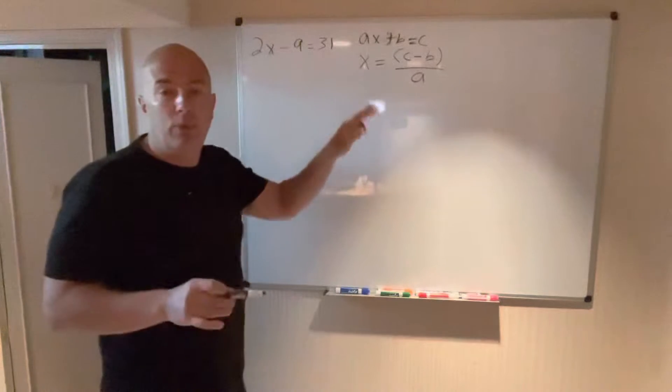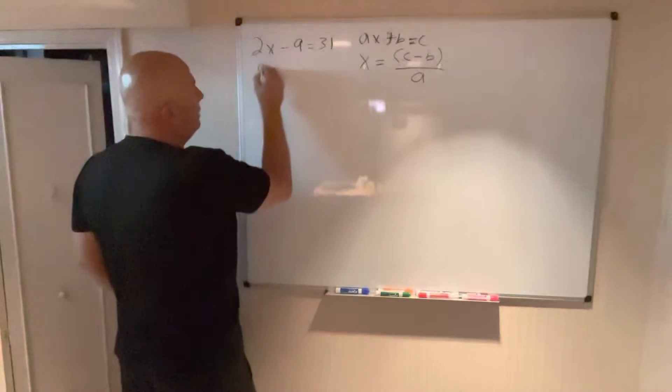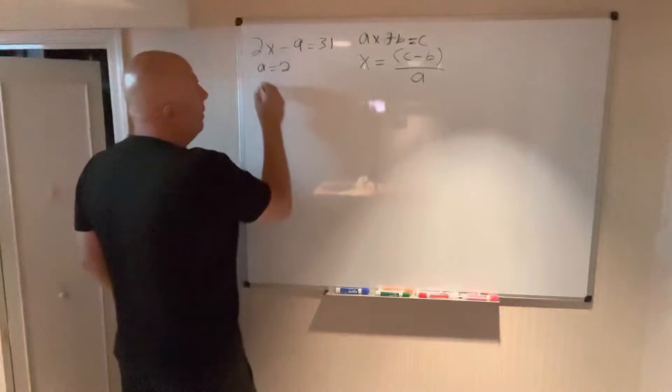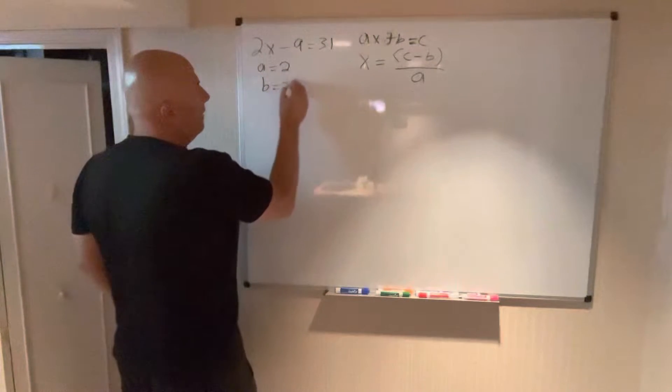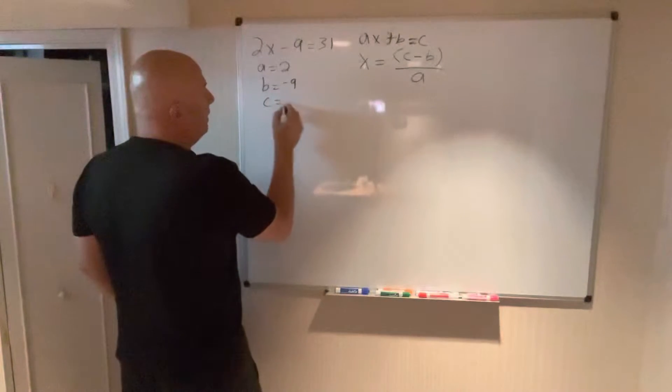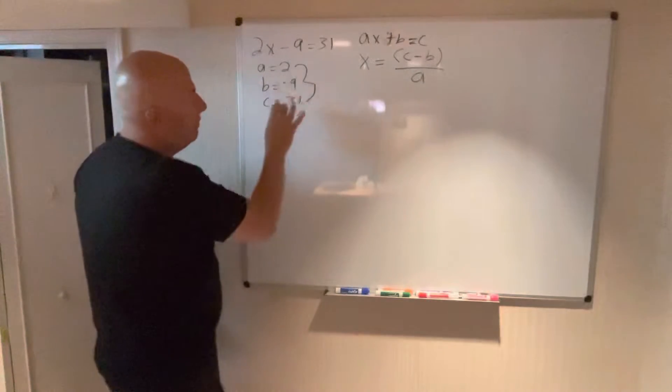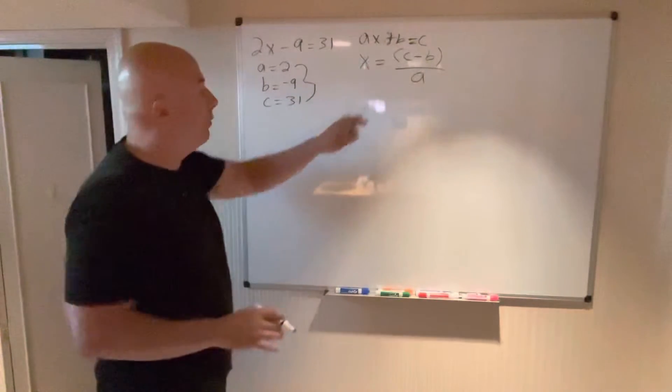So let's try this and then we'll check our work. So a in this case is 2, b is negative 9, and c on the other side of the equal sign is 31. So let's take these three values and plug it into this formula.